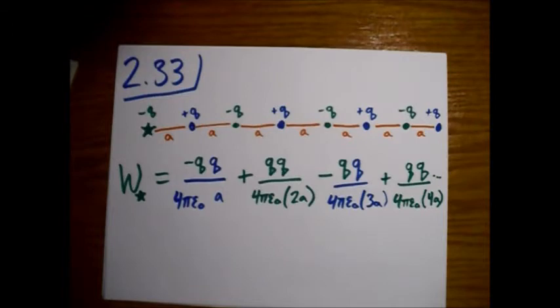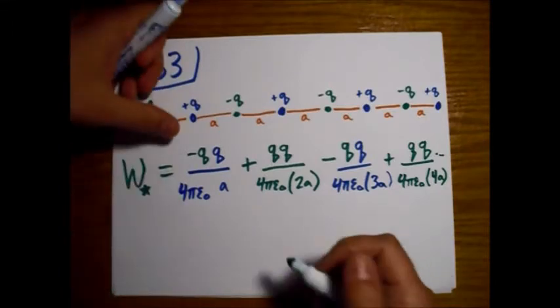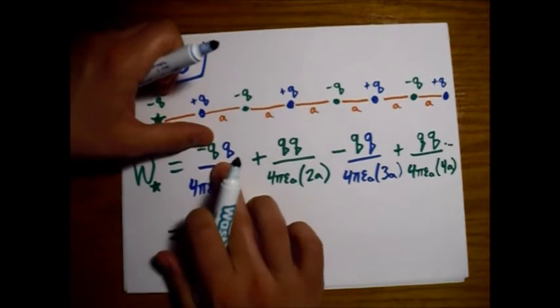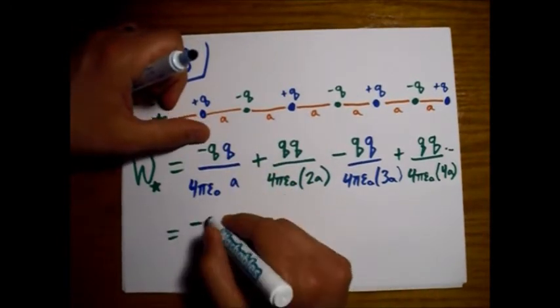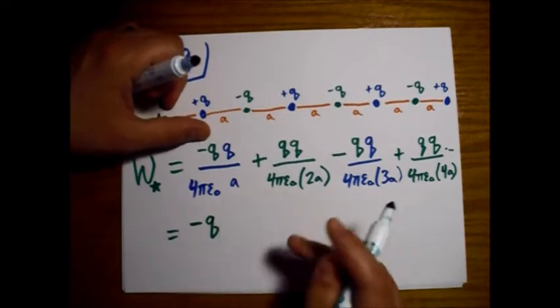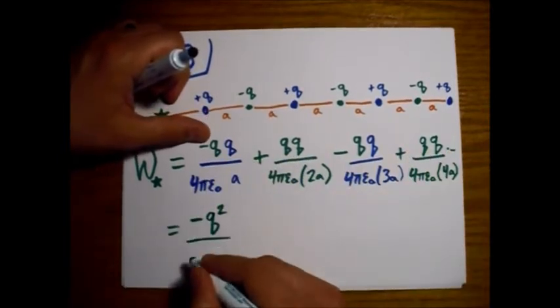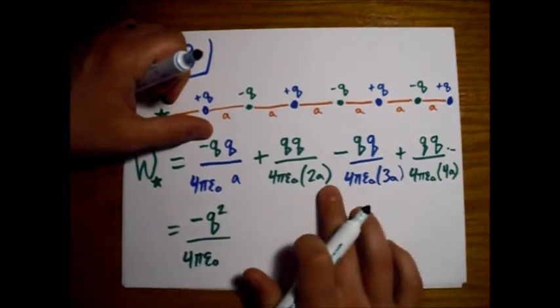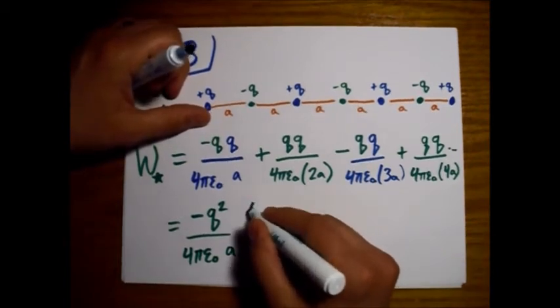So let's go ahead and factor out what we can from this. So I'm going to go ahead and factor out a minus sign so this first term will be positive when we write the sum out. So we'll now write the q squared. We have a 4πε₀, and now we factor out the a on the bottom.